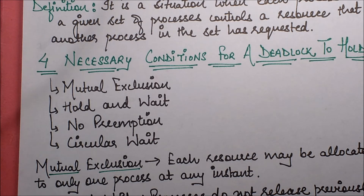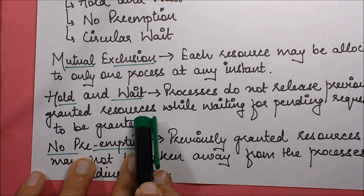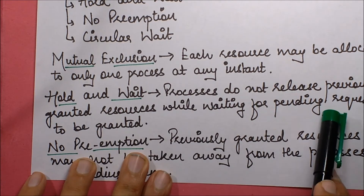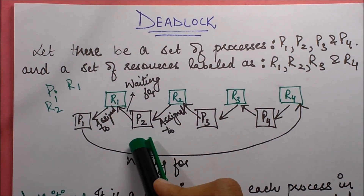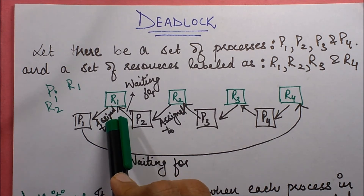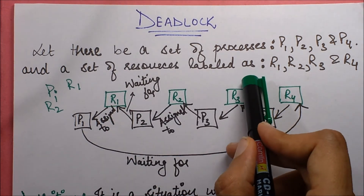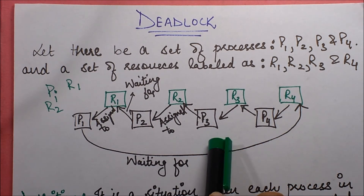Next is hold and wait. This means a process is holding one resource while requesting or waiting for another. Processes do not release previously granted resources while waiting for pending requests to be granted. For example, P2 is holding R2 while waiting for R1. If it had released R2 before requesting R1, P3 would not have been waiting and would not have been in deadlock.